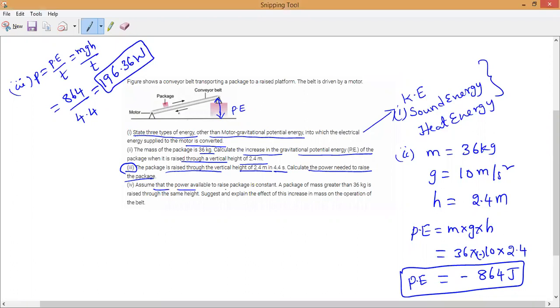Assume that the power available to raise the package is constant. A package of mass greater than 36 kg rises through the same height. Suggest and explain the effect of this increase in mass on the operation. So mass increases. What is happening? Potential energy will increase or not? Mass increases, so potential energy increases. Even though power is same, potential energy equals mgh. The power is constant but mass increases, so potential energy is directly proportional to the mass. So the rise in mass will increase potential energy.